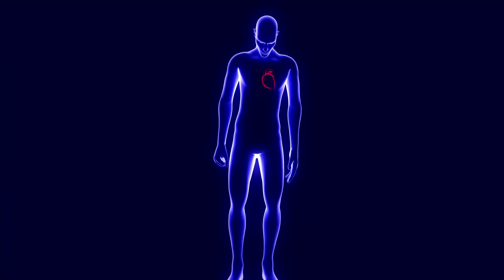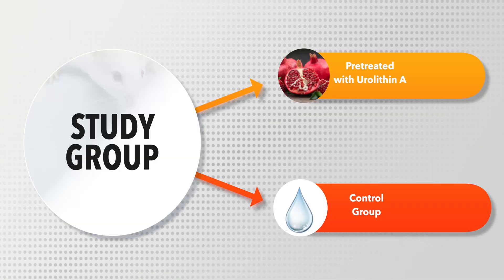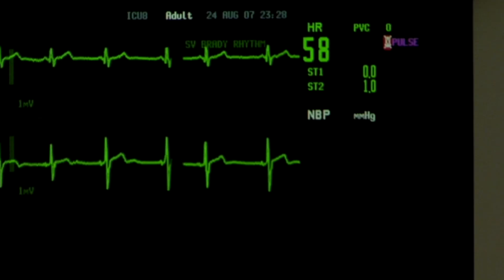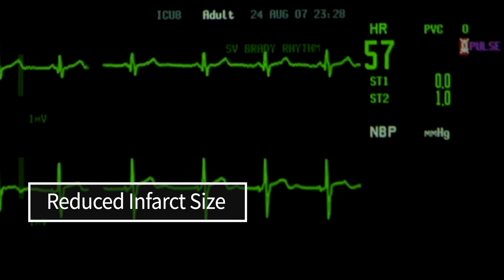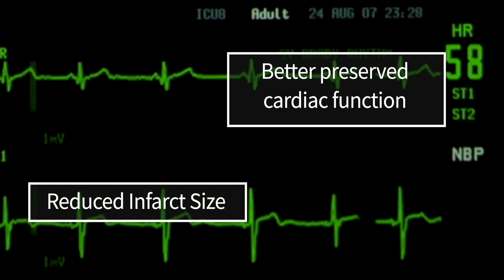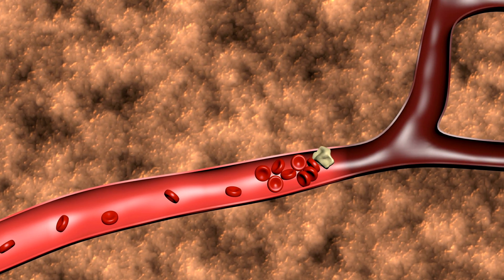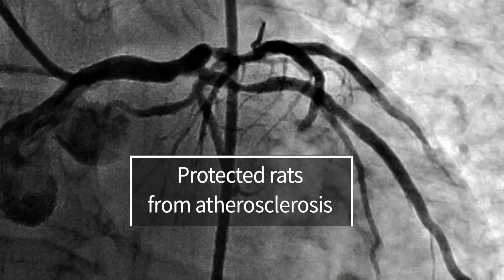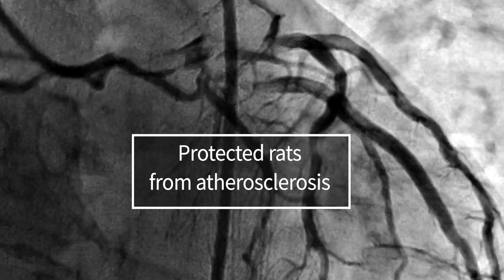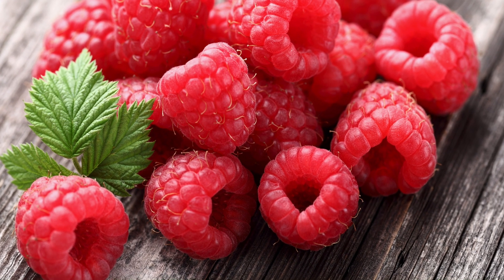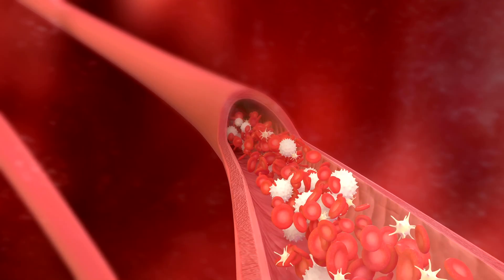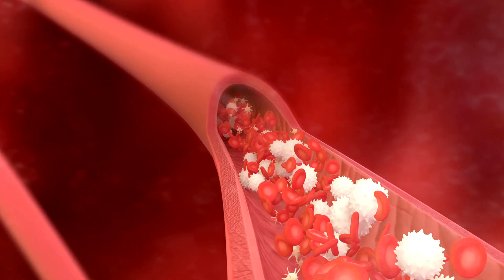Second, the heart and cardiovascular system. Urolithin A was studied in a mouse model of ischemic reperfusion injury — basically a myocardial infarction, or MI, also known as a heart attack. Animals pre-treated with urolithin A had a reduced infarct size and their cardiac function was much better preserved, with fewer heart cells dying. Another rat study showed that urolithin A protected against atherosclerosis. Lastly, urolithin A from consumption of red raspberries was shown to be correlated with improved endothelial function in humans.